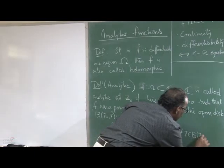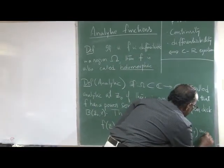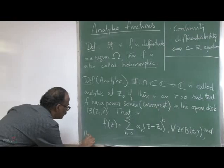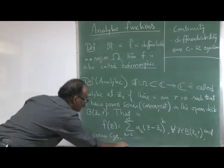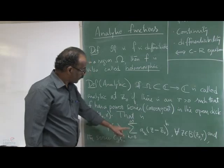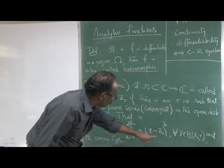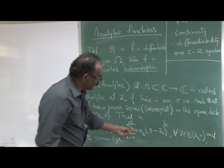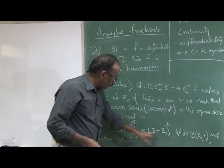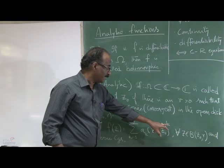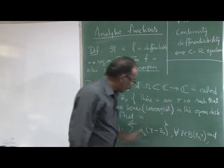The series converges for all z in the ball of center z-naught and radius r. This is a very powerful thing — if a function is analytic, you can write it in this form, which is like an infinite version of a polynomial. When the number of terms is finite it is a polynomial, and the highest k is the degree. If it is analytic, it has a power series representation, and the important thing is convergence at every point in this neighborhood.